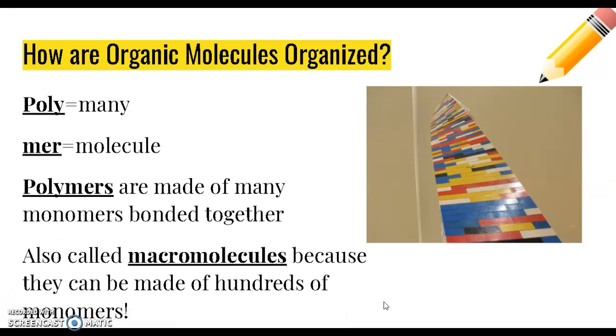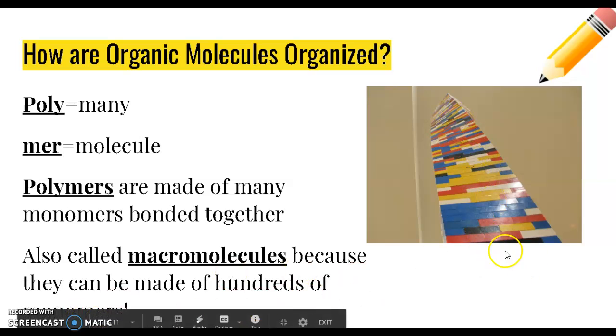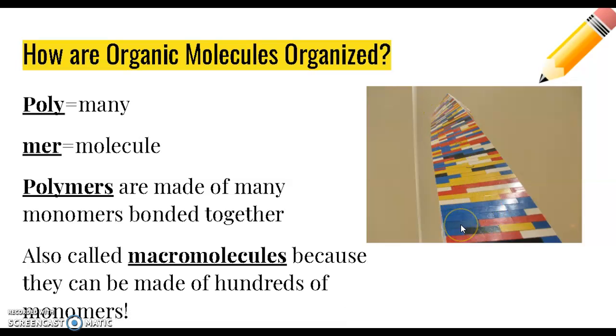These monomers, these individual building block molecules, can be put together in order to form polymers. Poly means many, mer's molecule, so polymers are made of many monomers bonded together. Polymers are also known as macromolecules. Macro means big. These are huge molecules that can be made of hundreds of different monomers. This Lego tower is like a polymer because it is made of many of those individual Lego building block monomers.